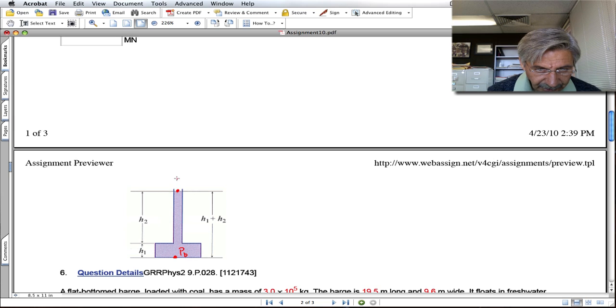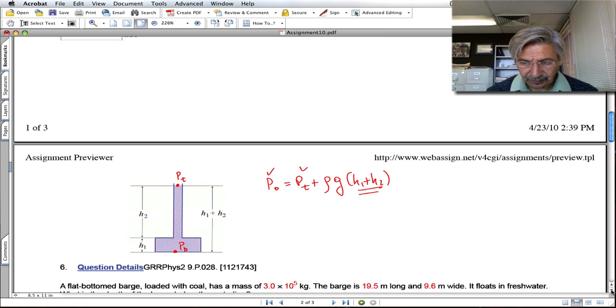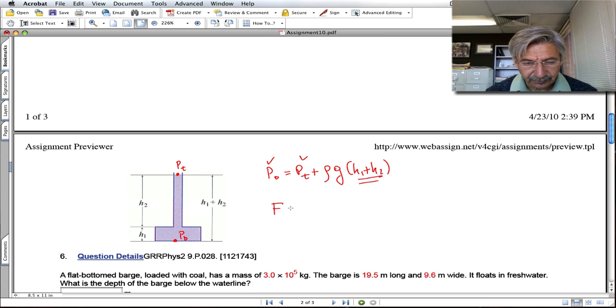At the bottom, the pressure is equal to the pressure at the top plus the density of water times g times the height. This is atmospheric pressure. Once you know the pressure at the bottom, you know the force because the force is this pressure at the bottom times this area here.